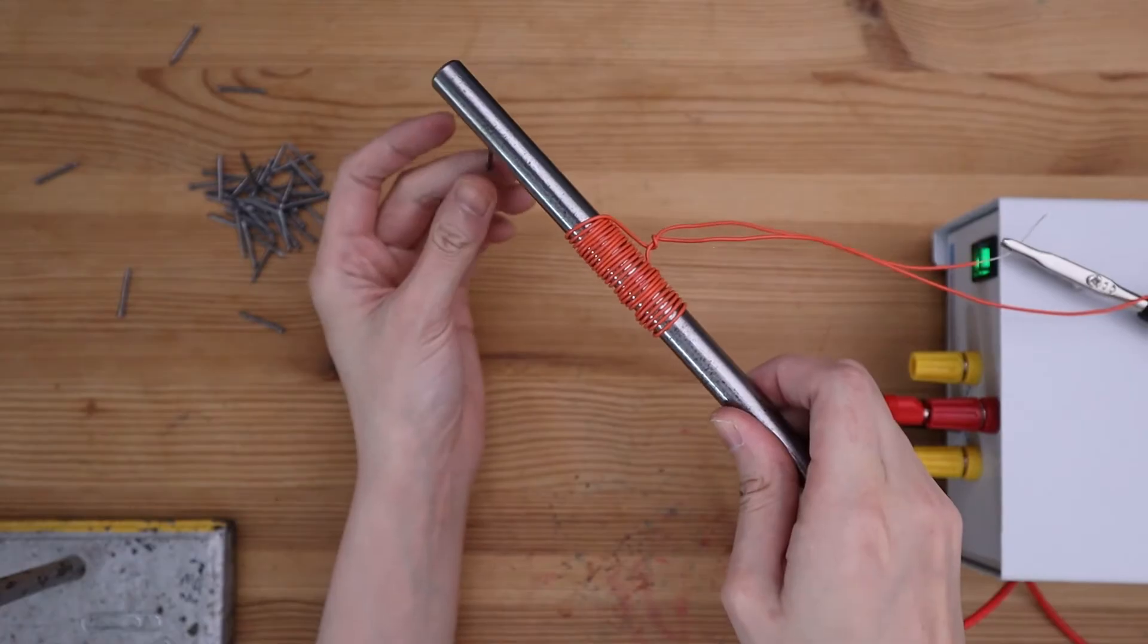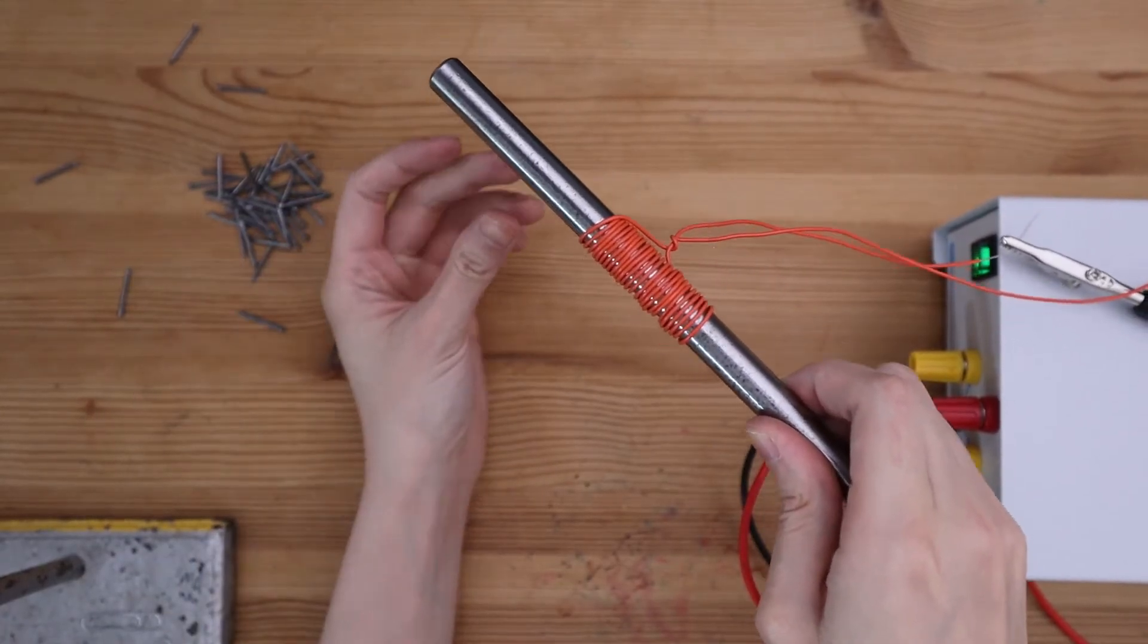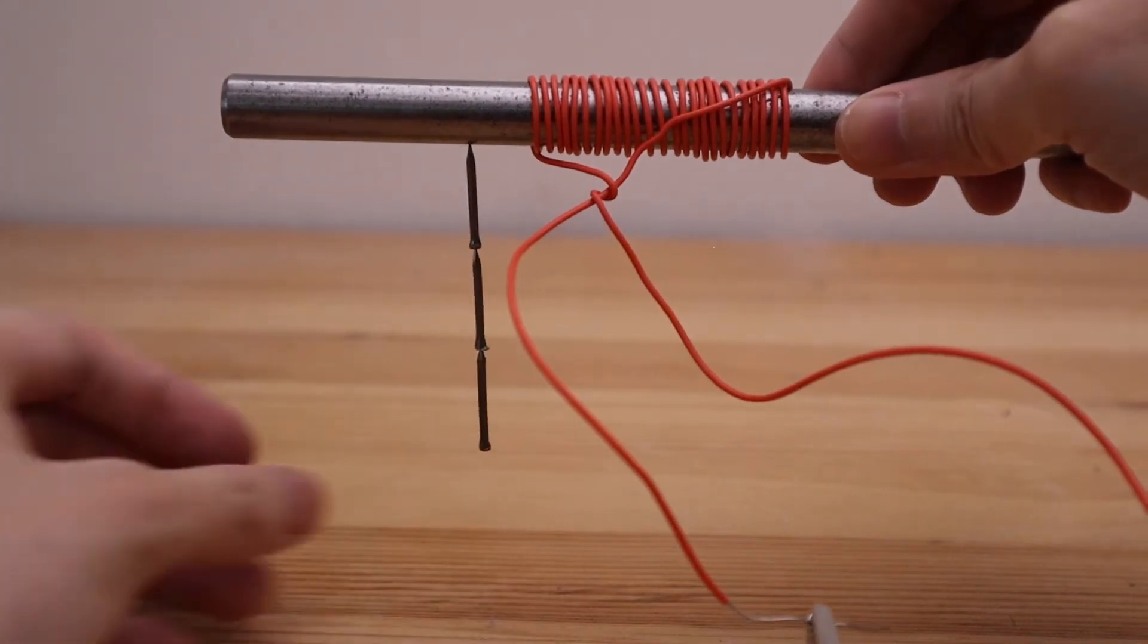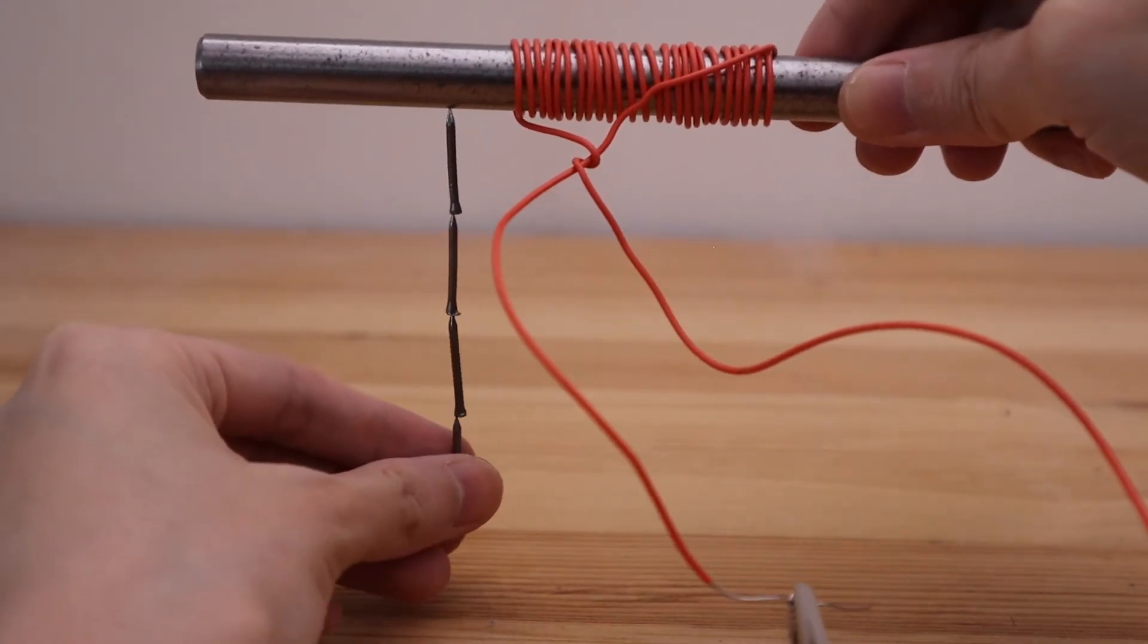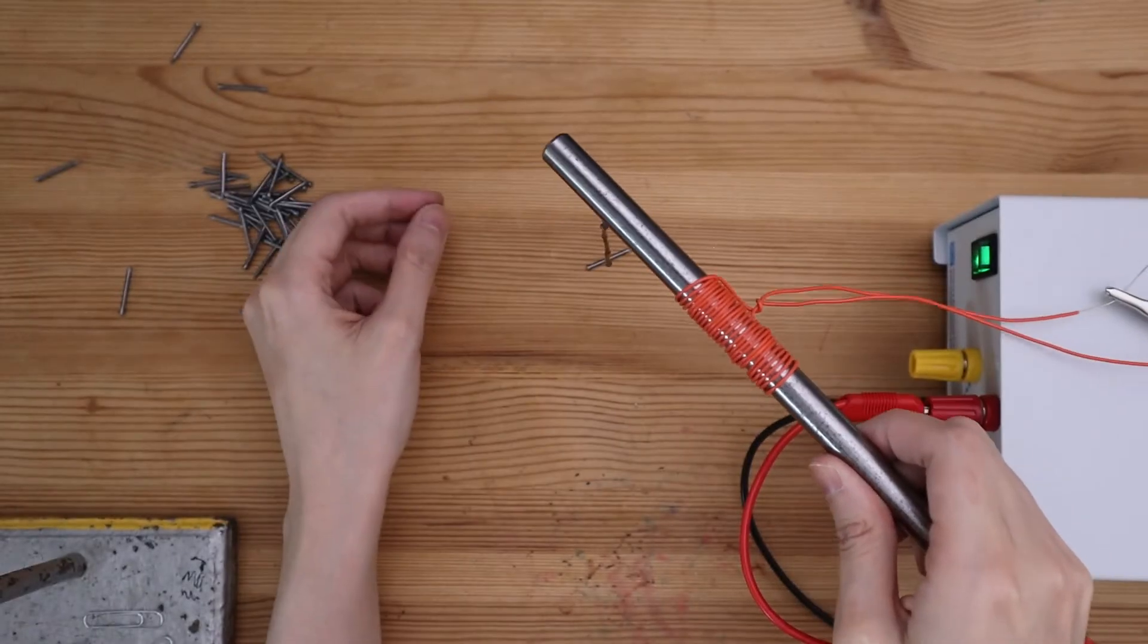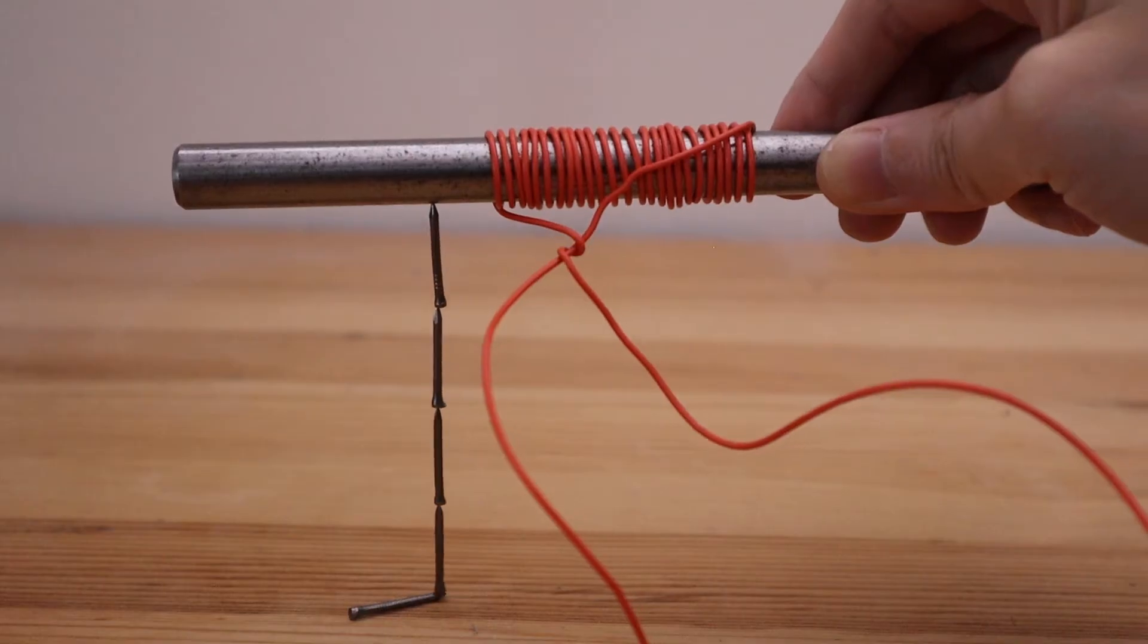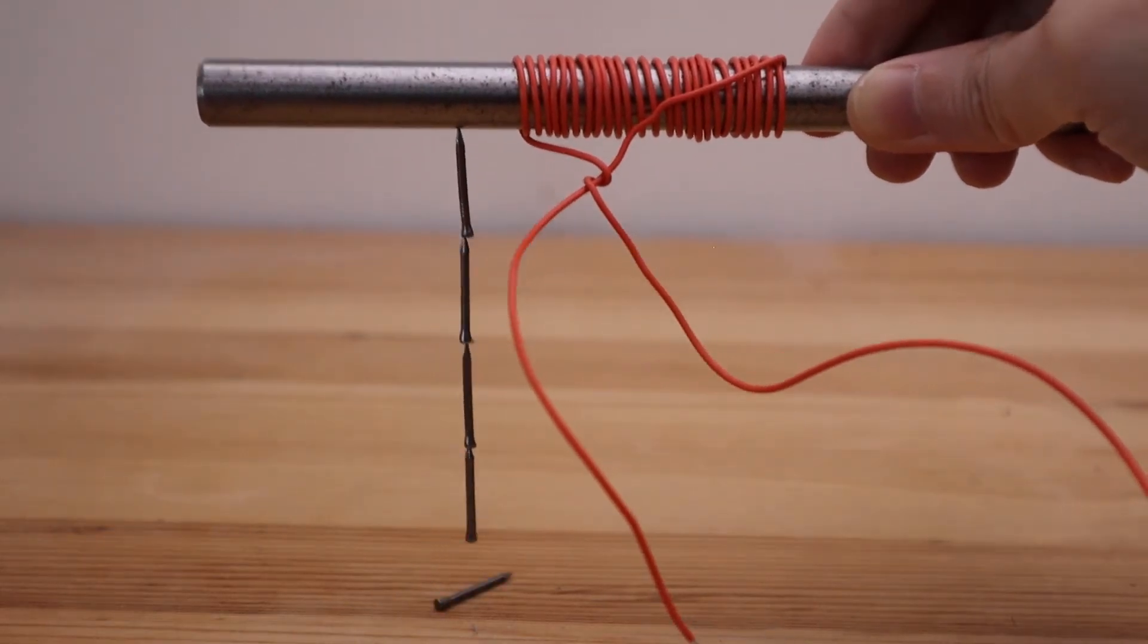One way to make the electromagnet stronger is to increase the number of turns, let's say to 50 turns. Another way is to increase the voltage either by putting multiple batteries in series or using a power supply that lets you increase the voltage.